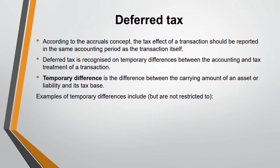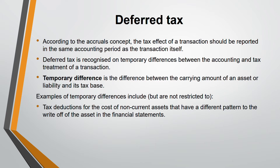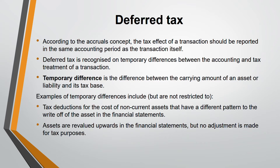Some examples of temporary differences include: first, tax deductions for the cost of non-current assets that follow a different pattern to the write-off in the financial statements — the tax authority does it differently, creating a temporary difference. Second, assets are revalued upwards in the financial statements but no adjustment is made for tax purposes, so the tax base remains the same while the carrying amount goes up.